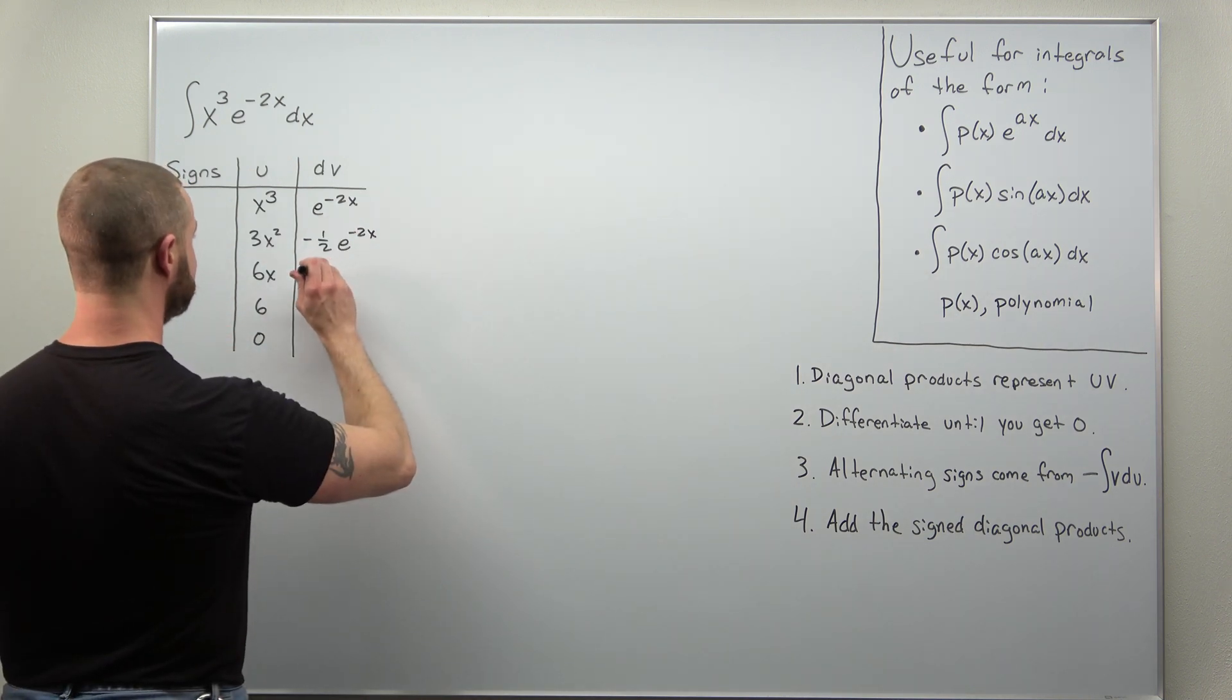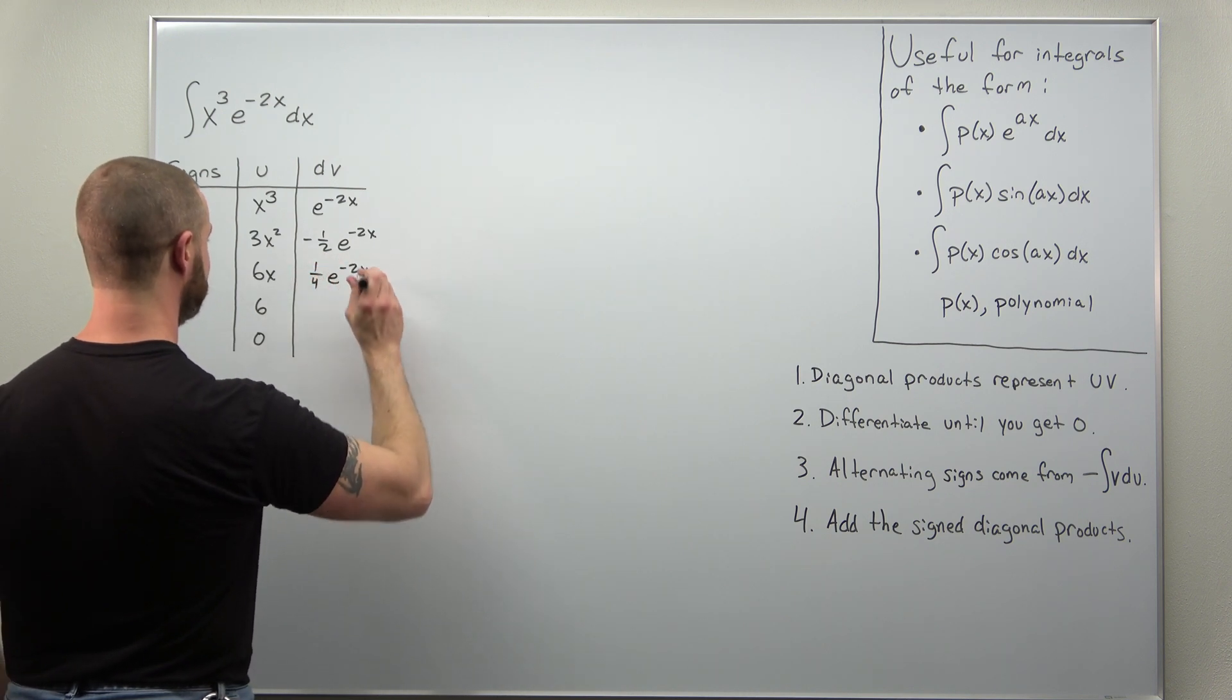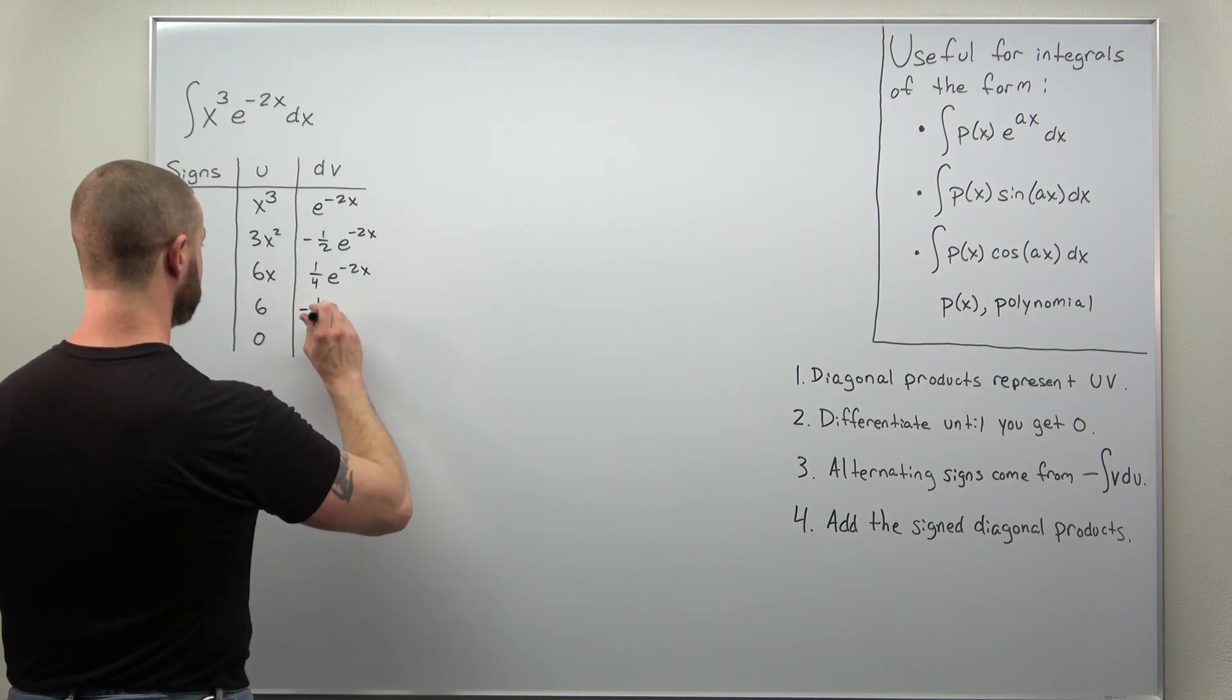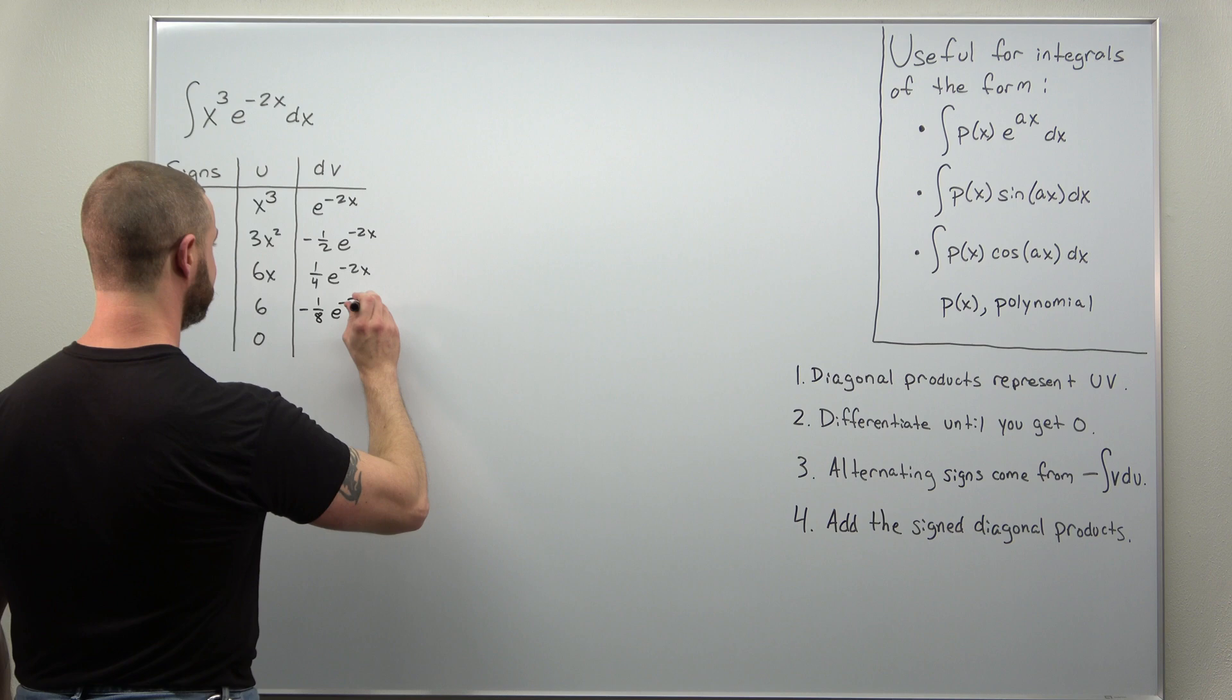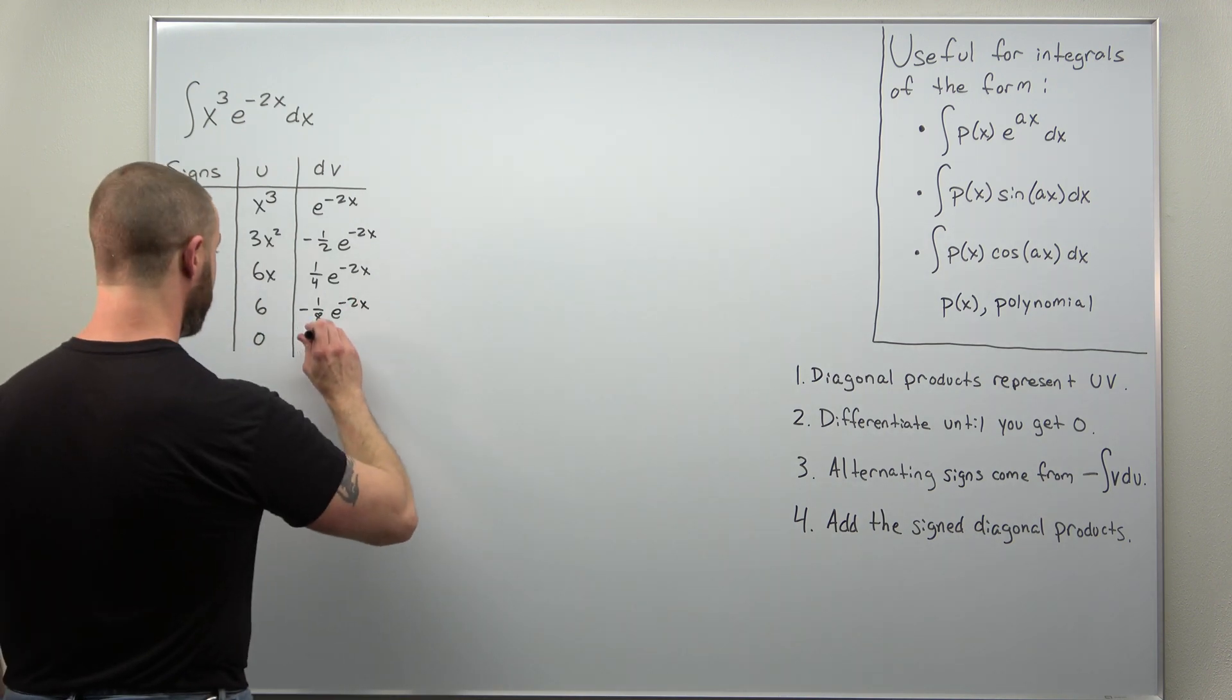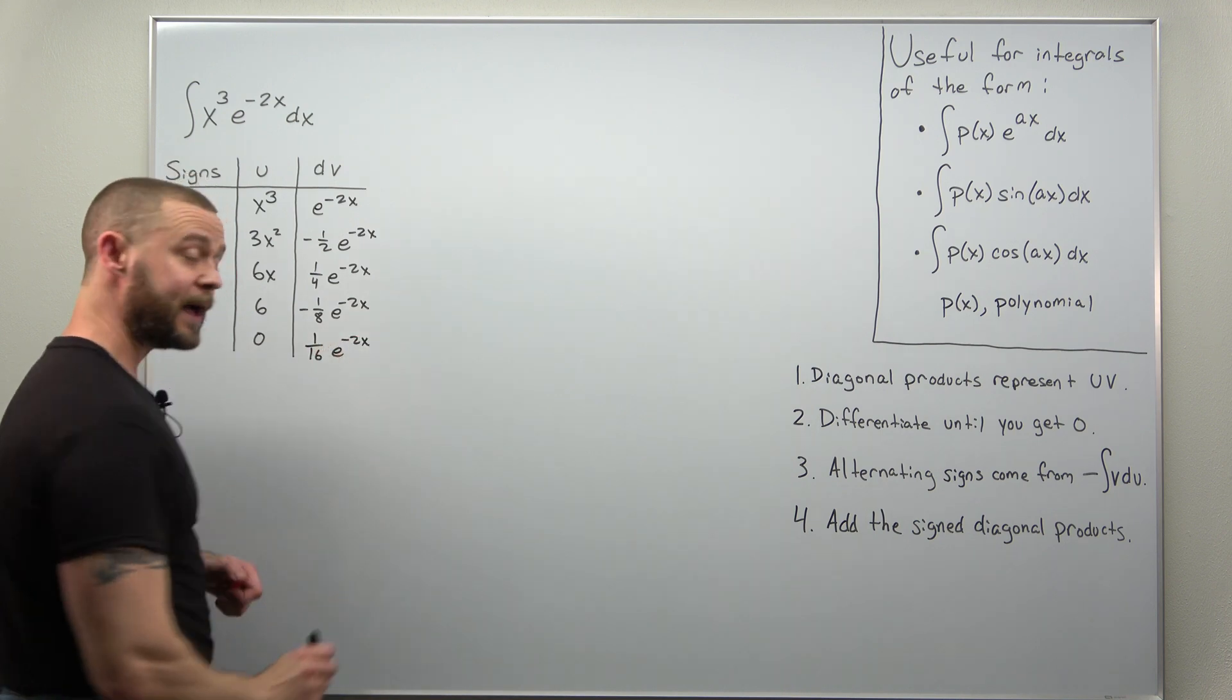So your next antiderivative would be positive 1 over 4 e to the negative 2x. The next one negative 1 over 8 times e to the negative 2x, and then your last one positive 1 over 16 e to the negative 2x.